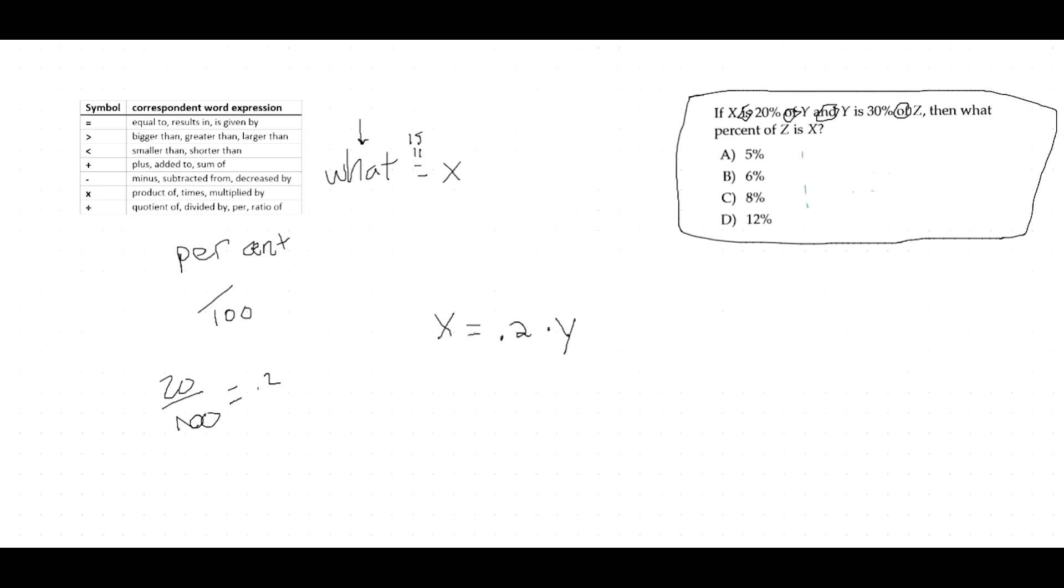And then it says, and y is 30% of z. So y, what did I say about is? It's equal sign. And then 30%, so 0.3. And then of, what did I say of is? Multiply. Of z.